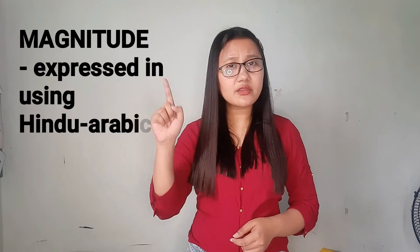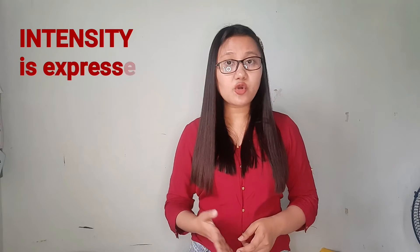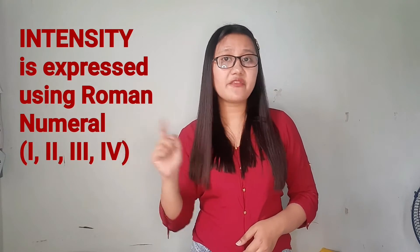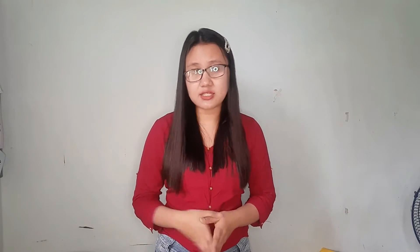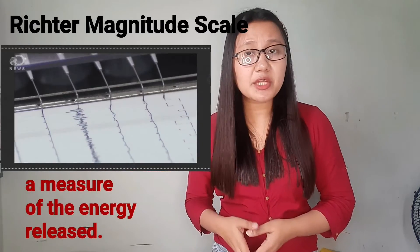How do we distinguish magnitude from intensity? For magnitude, we use Hindu-Arabic numerals like 1, 2, 3, 4, 5, and so on. For intensity, we use Roman numerals — I, II, III, IV, and so on. Magnitude is determined using the Richter magnitude scale — a device that measures the energy released by the earthquake. There is only one magnitude per earthquake. PHIVOLCS uses the PEIS or Philippine Earthquake Intensity Scale to identify the level of intensity.